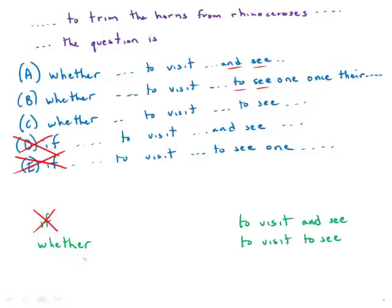If we put them in parallel to visit and see it puts them on equal footing. It means that people would go to the game reserve and then if they feel like it, if time works out maybe they would see the rhinoceros. And that doesn't quite make sense.